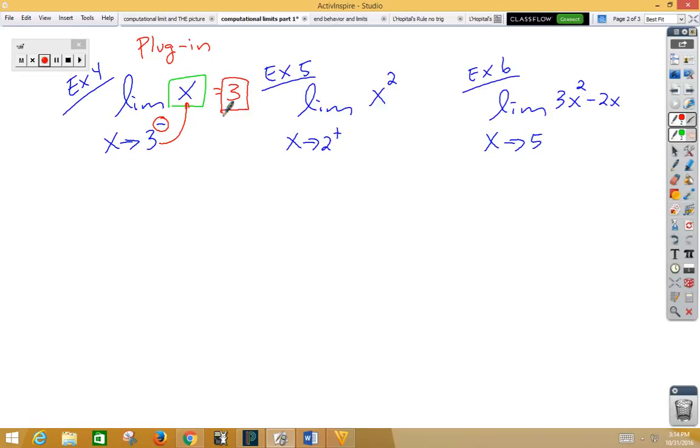In example five, our function has been altered to x squared. Again, plugging in does not matter what direction. If I plug in a two, two squared is four. When we get a good, valid answer, we are done.